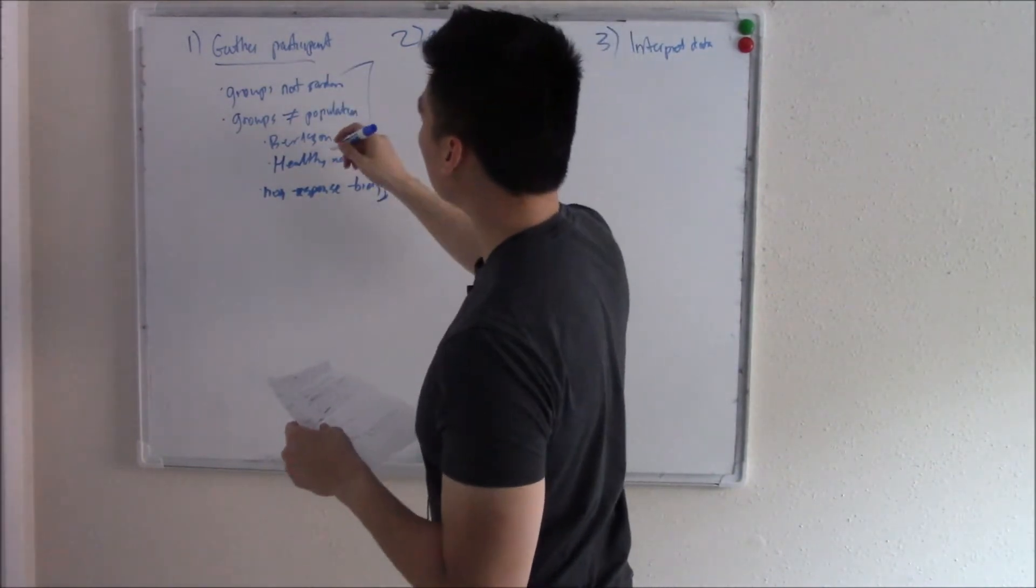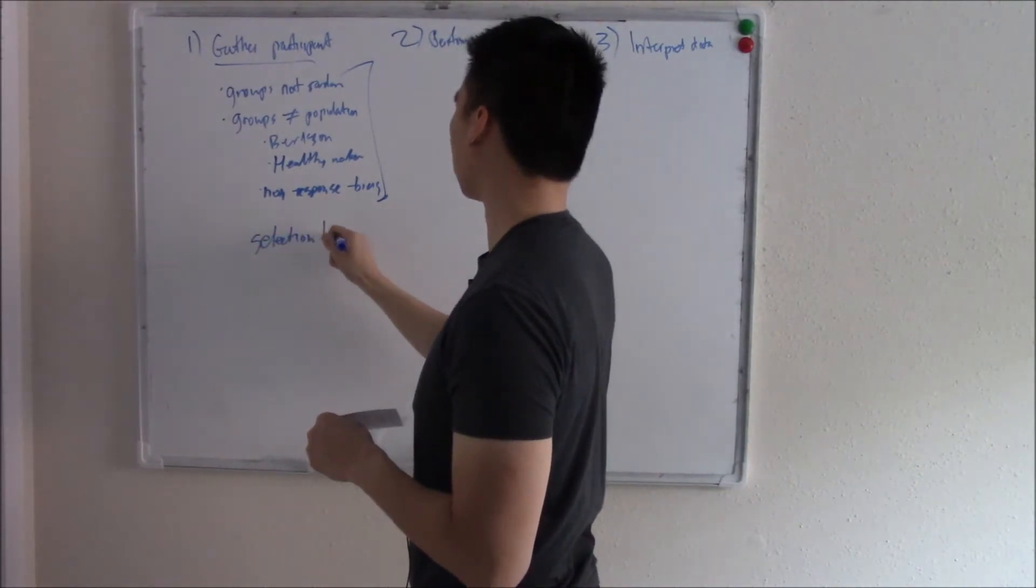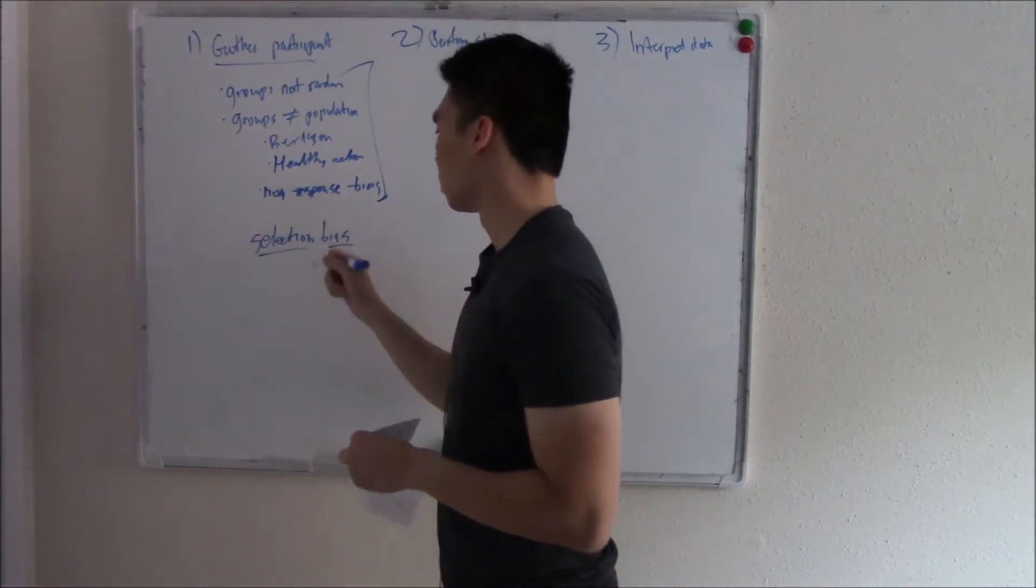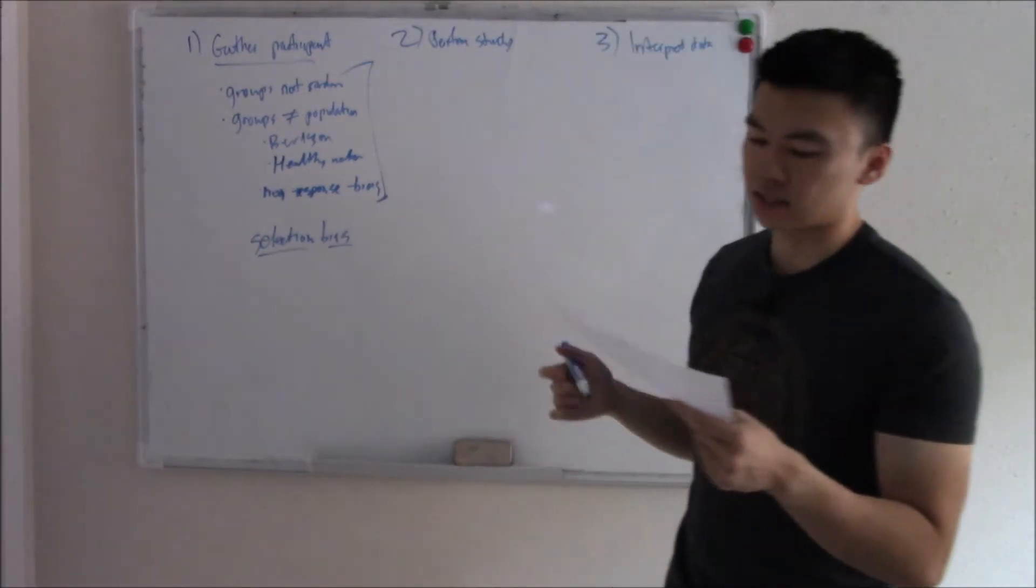All this can be summed up into one word: selection bias. Name gives it away. There's something wrong with how you're selecting your participants, and it skews your data. That is selection bias.